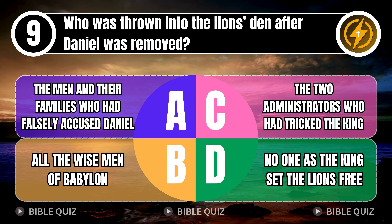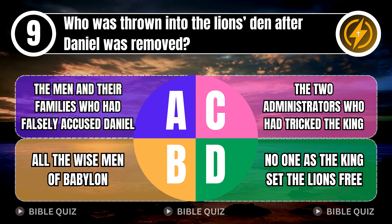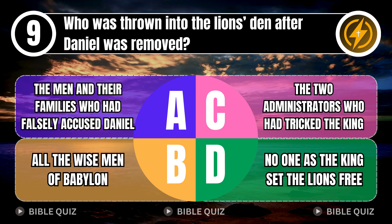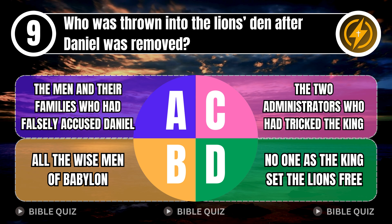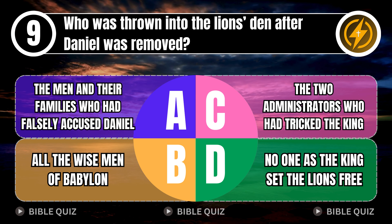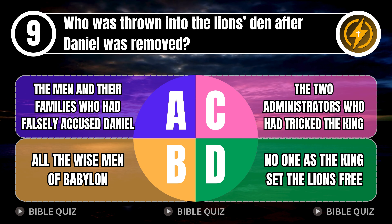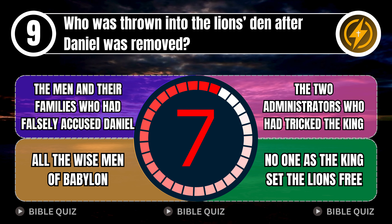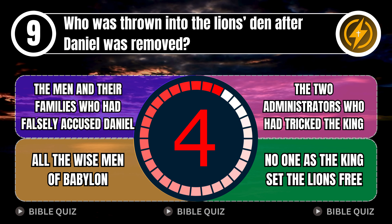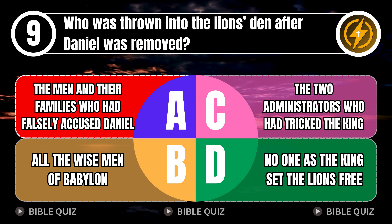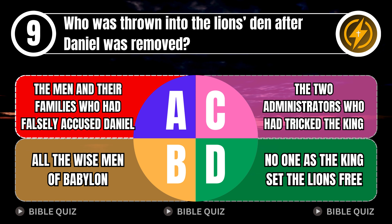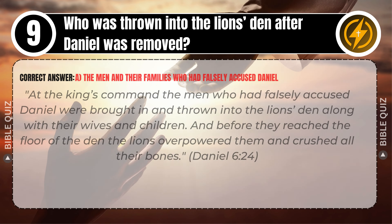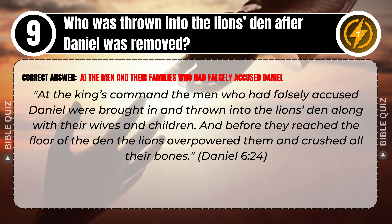Question 9: Who was thrown into the lion's den after Daniel was removed? A. The men and their families who had falsely accused Daniel. B. All the wise men of Babylon. C. The two administrators who had tricked the king. D. No one, as the king set the lions free. Correct answer: A. The men and their families who had falsely accused Daniel. At the king's command, the men who had falsely accused Daniel were brought in and thrown into the lion's den, along with their wives and children, and the lions crushed all their bones. Daniel 6 verse 24.